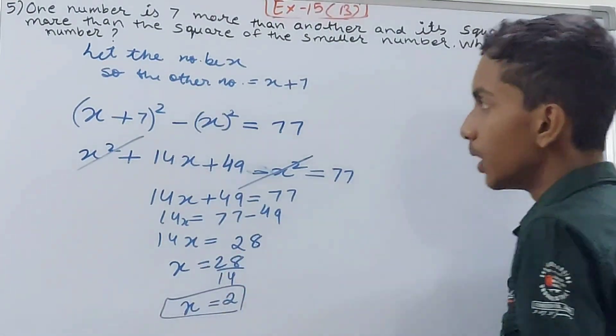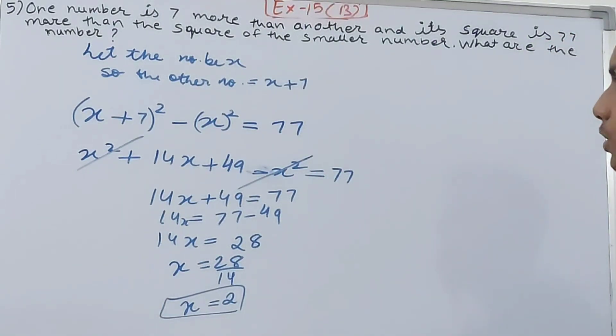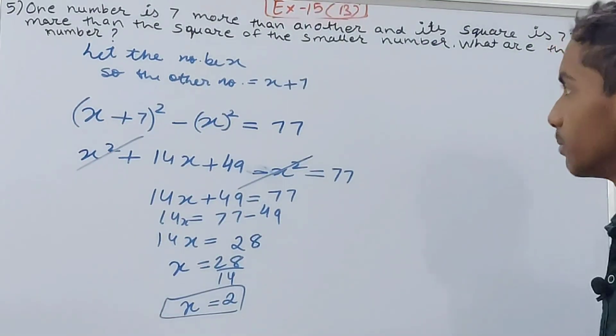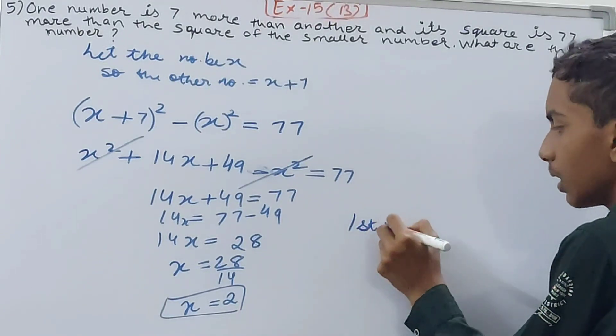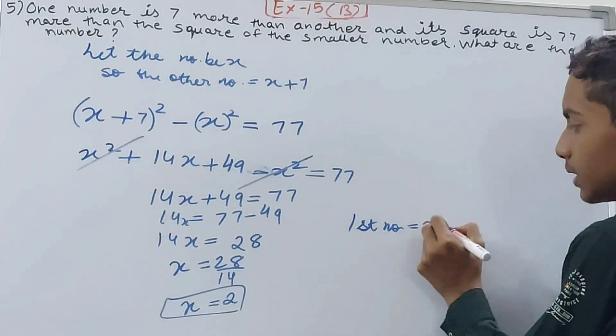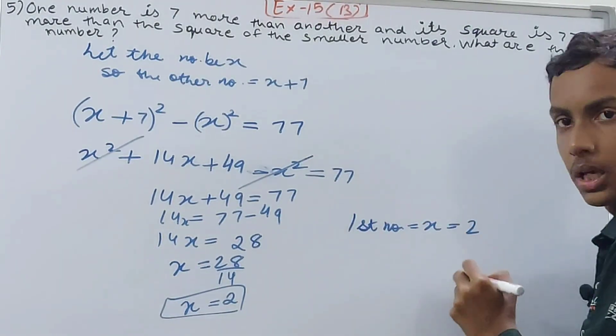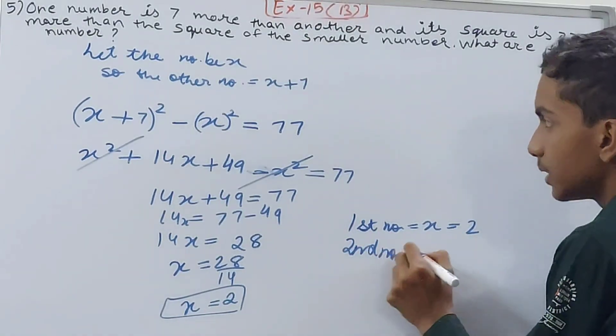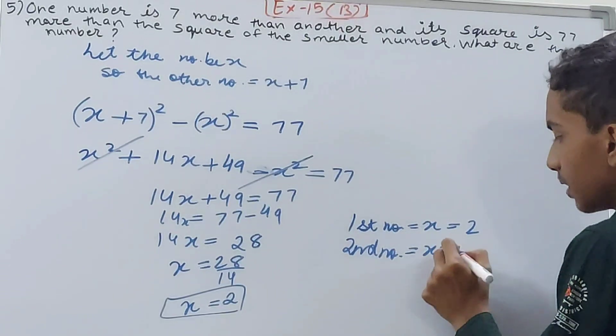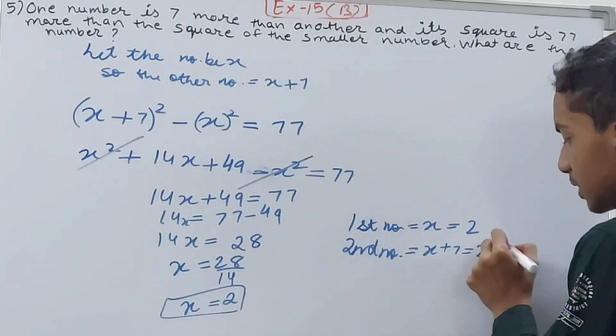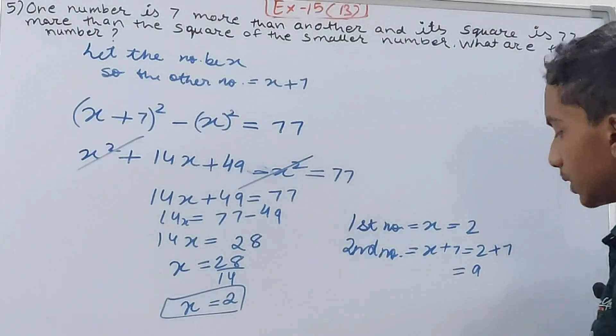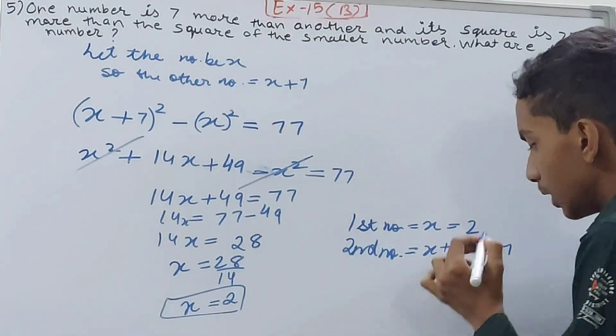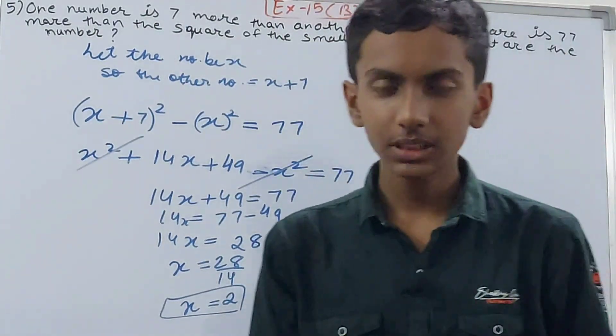x is 2. What are the numbers? The first number is x, which is 2. The second number is x+7, which is 2+7 = 9. The numbers are 2 and 9. That's your answer.